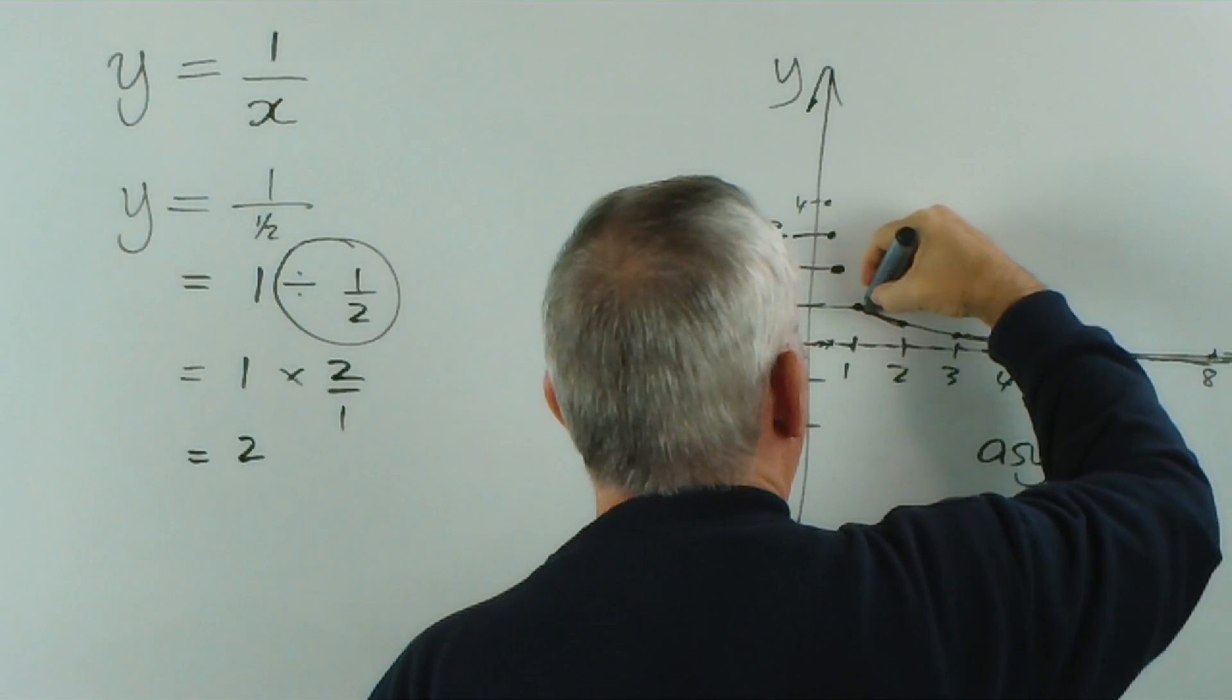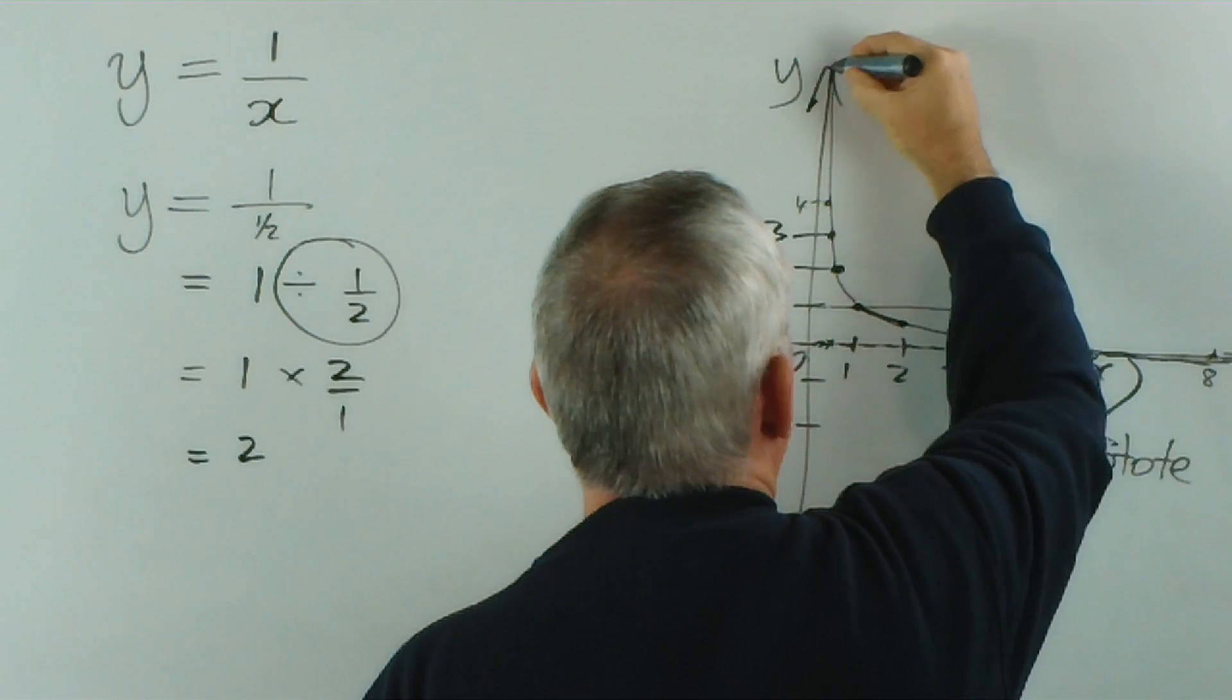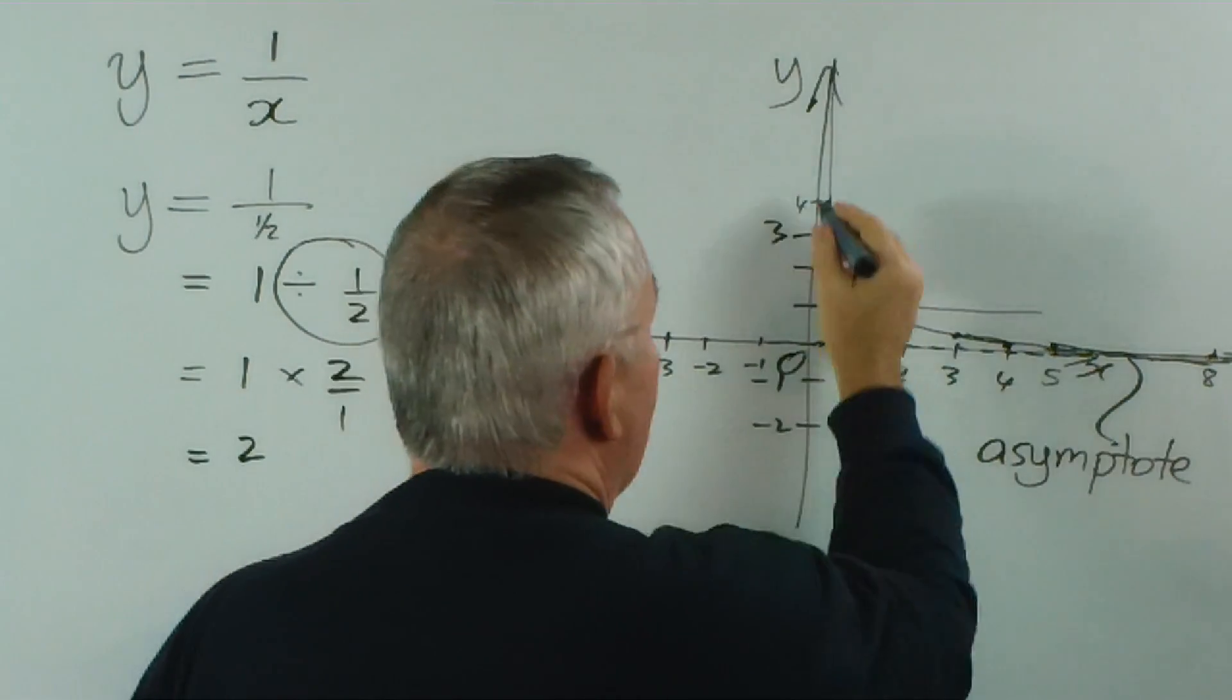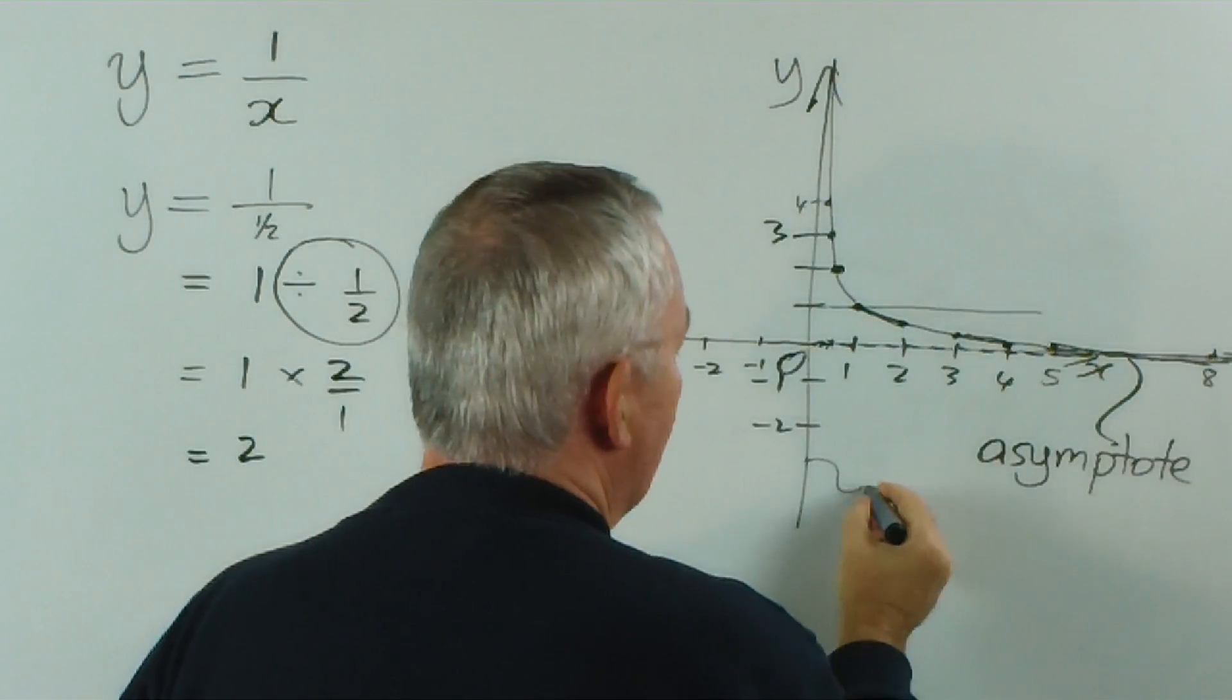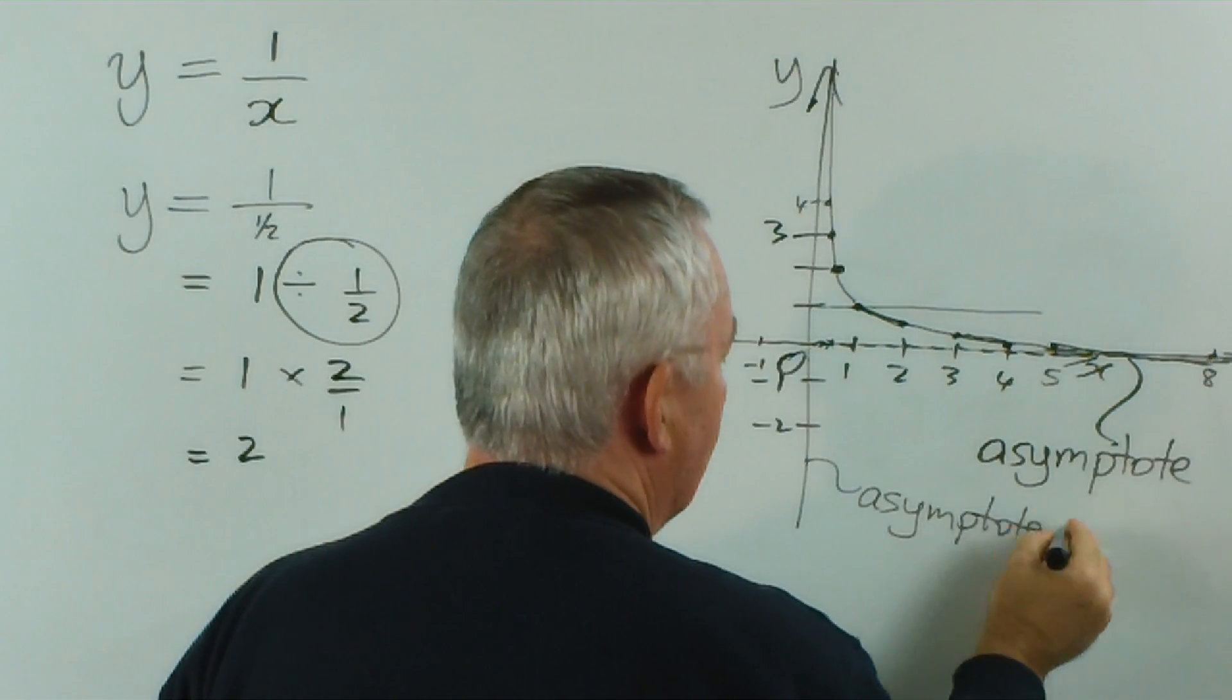So this function, the graph here, will continue up here, forever getting closer to the y-axis. So it turns out that the y-axis is also an asymptote of this function.